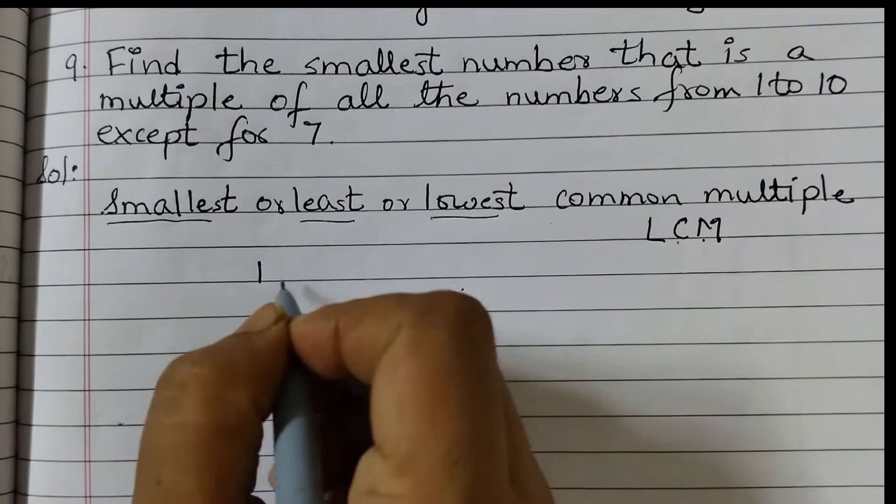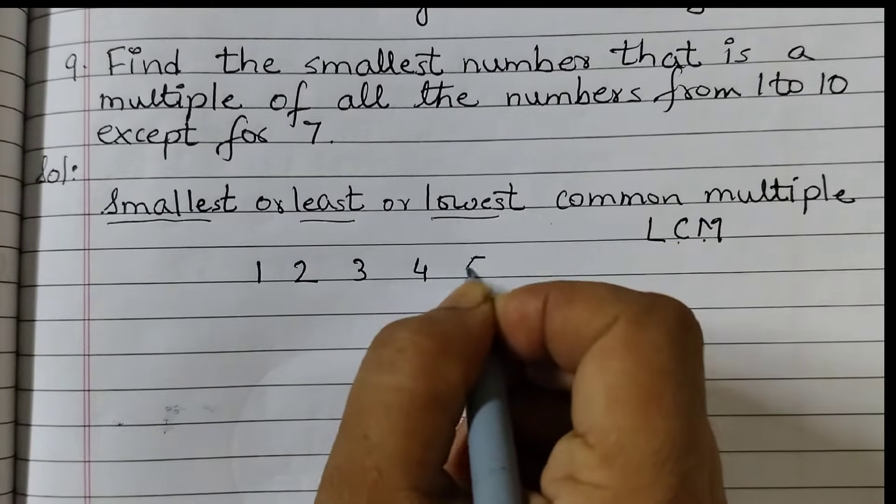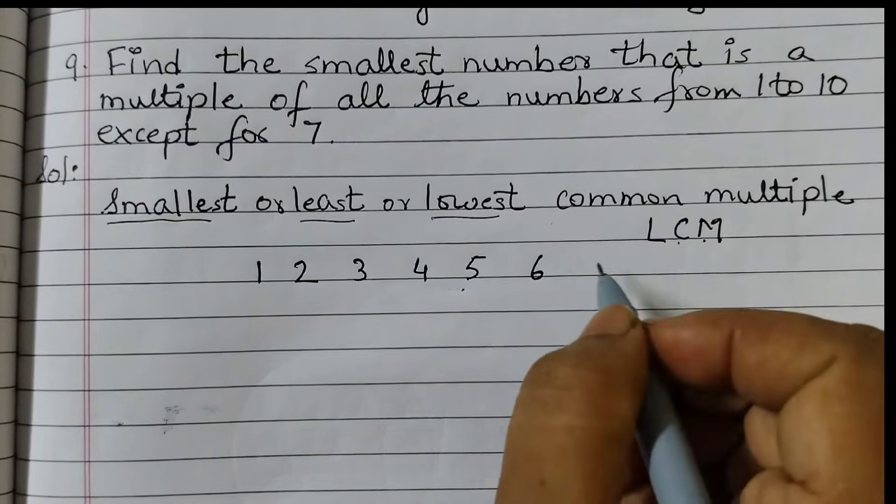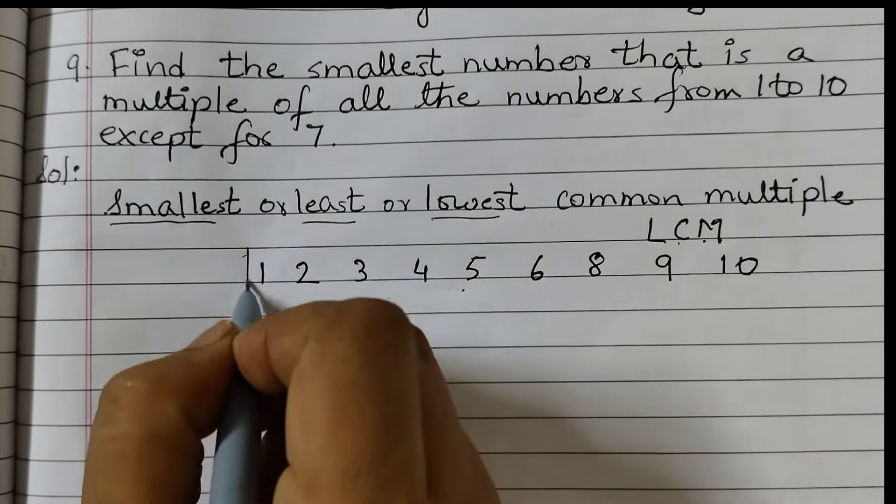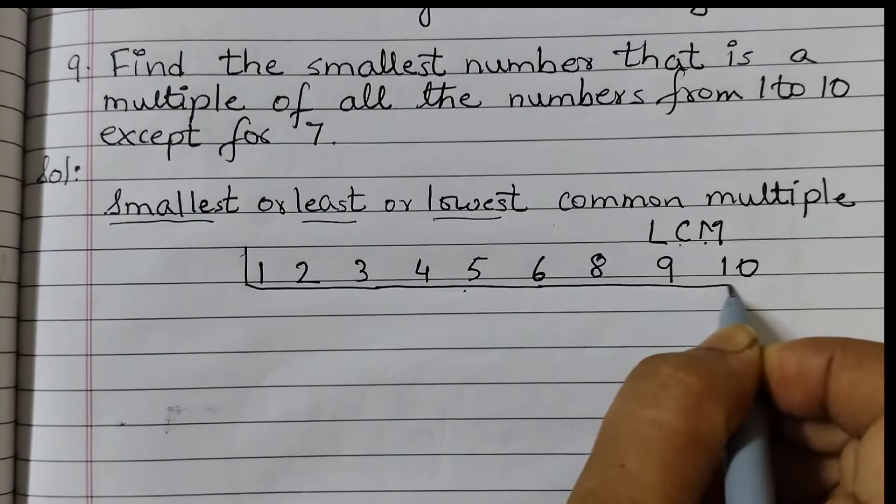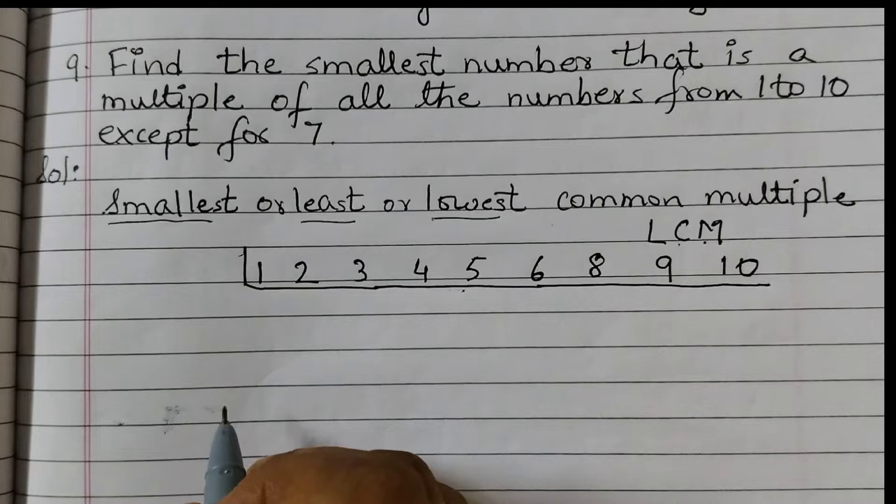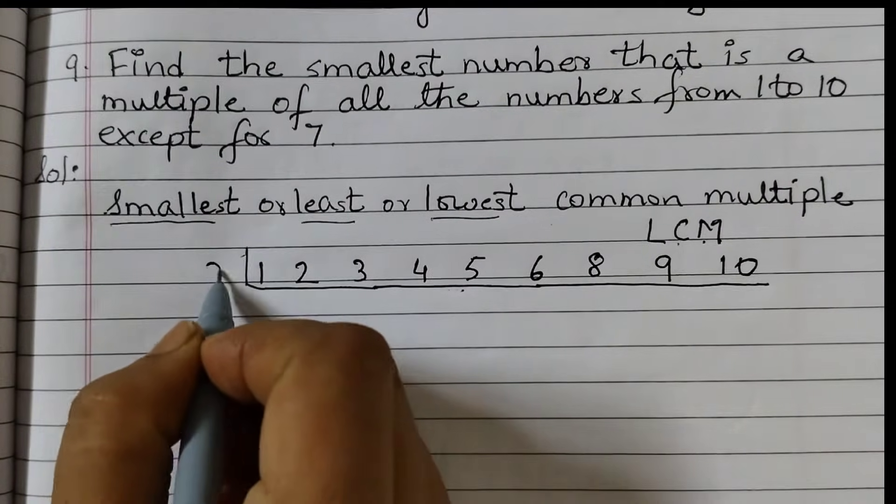Like this: 1, 2, 3, 4, 5, 6, 7 is not there, 8, 9, 10. And then you draw lines like this. Divide by the least prime number, so the least prime number or the lowest prime number is 2. We will always start with 2.